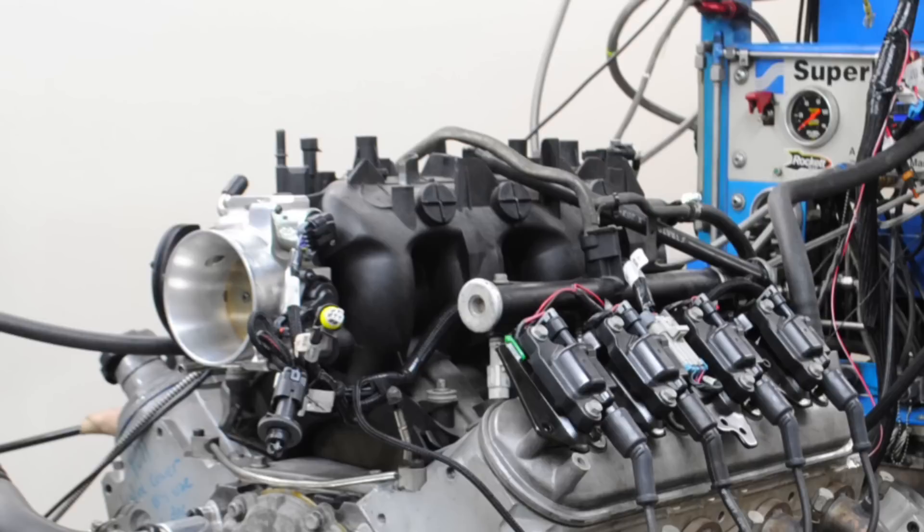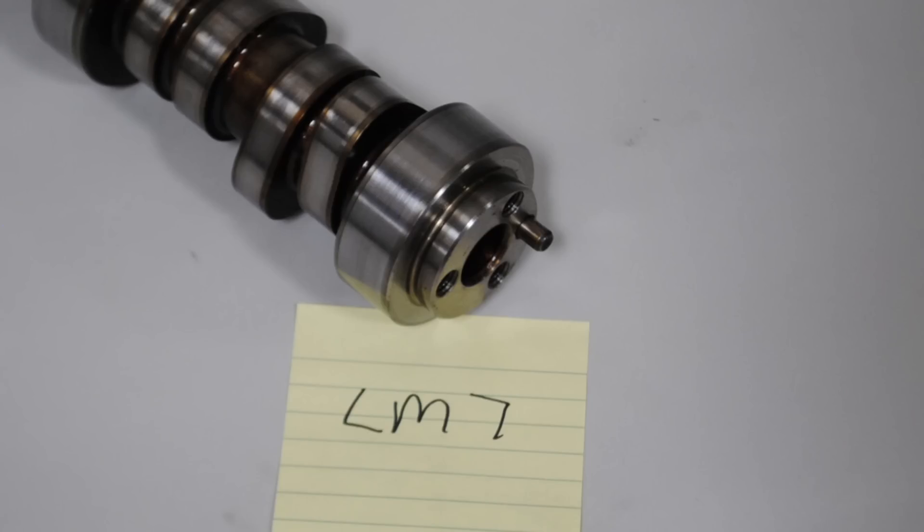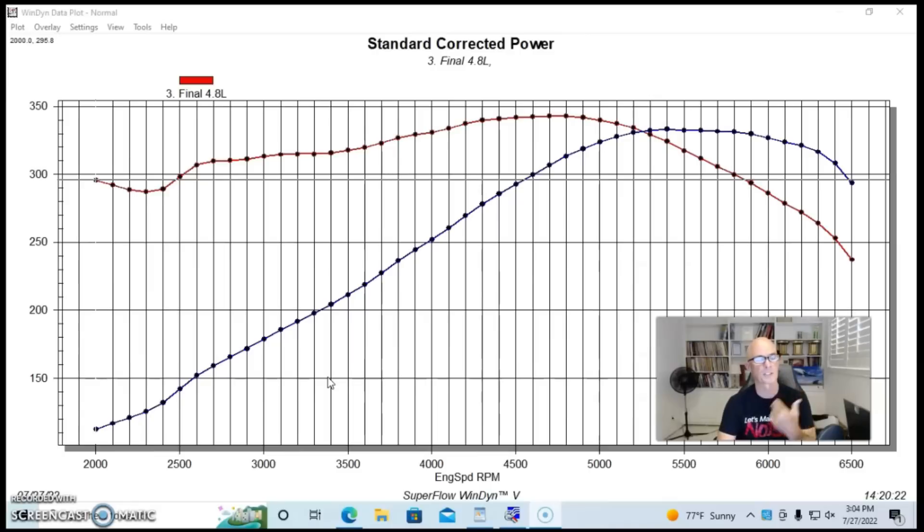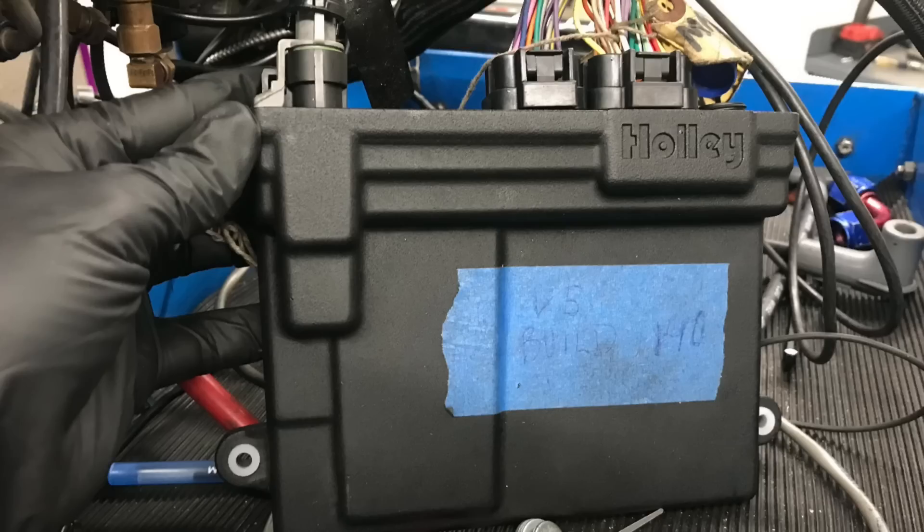But again, same truck manifold, same LM7, LR4 camshaft, same 862 or 706 head. And we run them on the dyno in the same way. So run in this manner with a Holley HP management system and optimized.